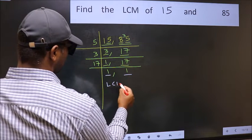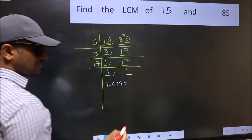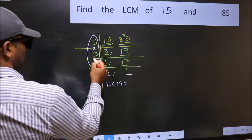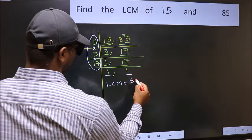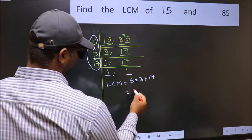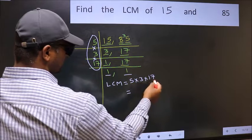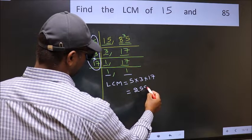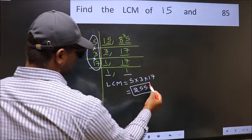So our LCM is the product of these numbers. That is 5 times 3 times 17. When we multiply these numbers, we get 255 as our LCM.